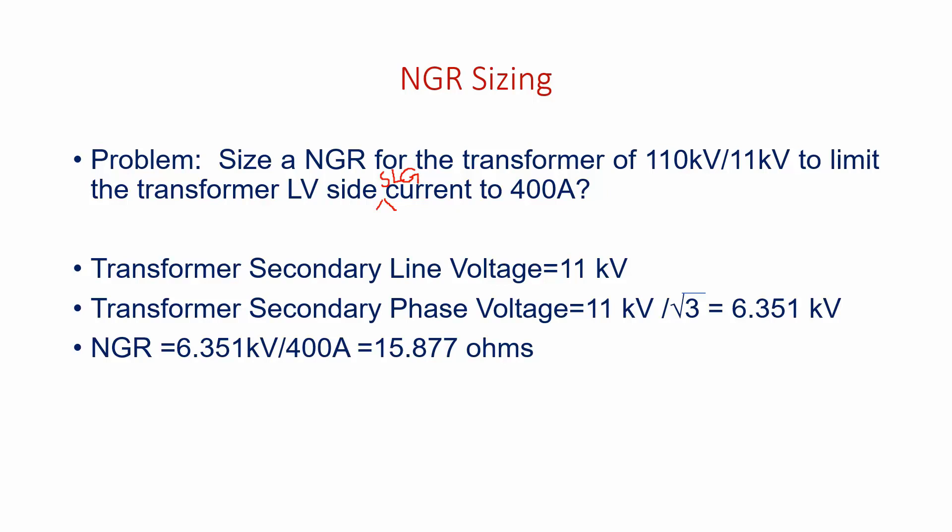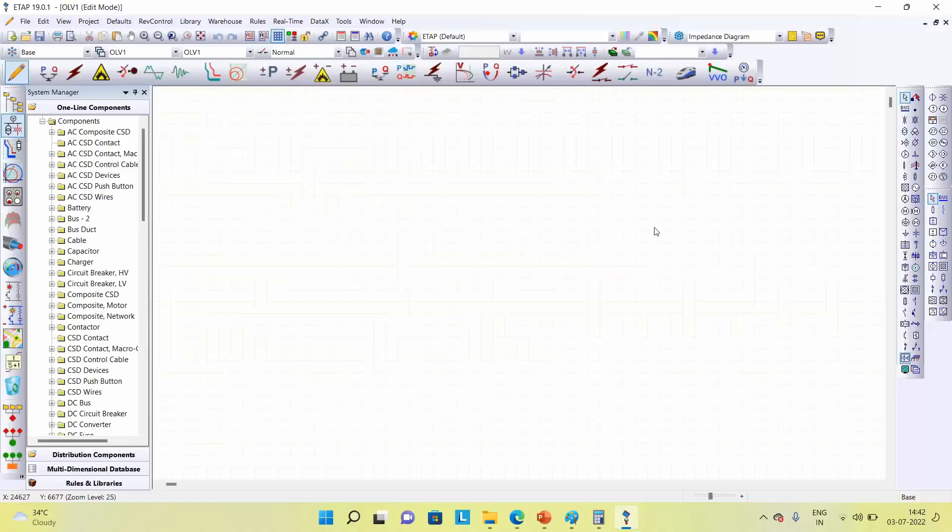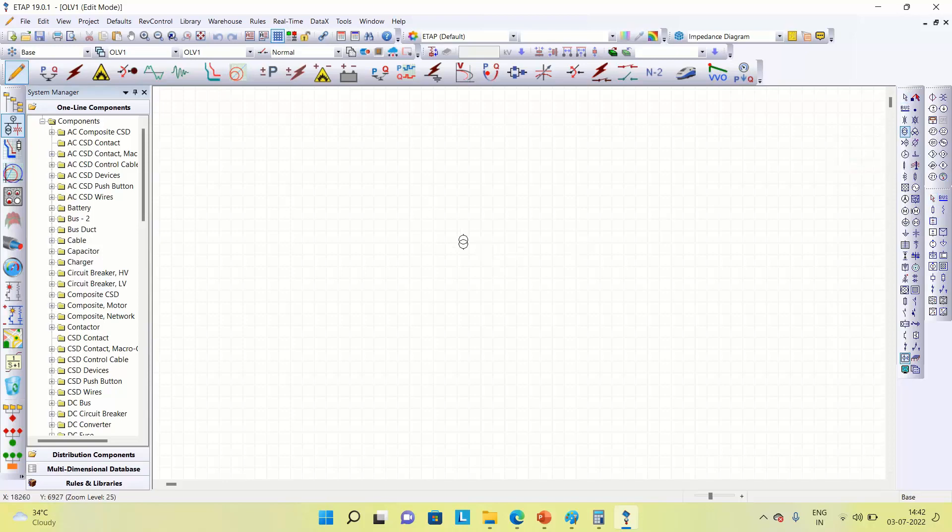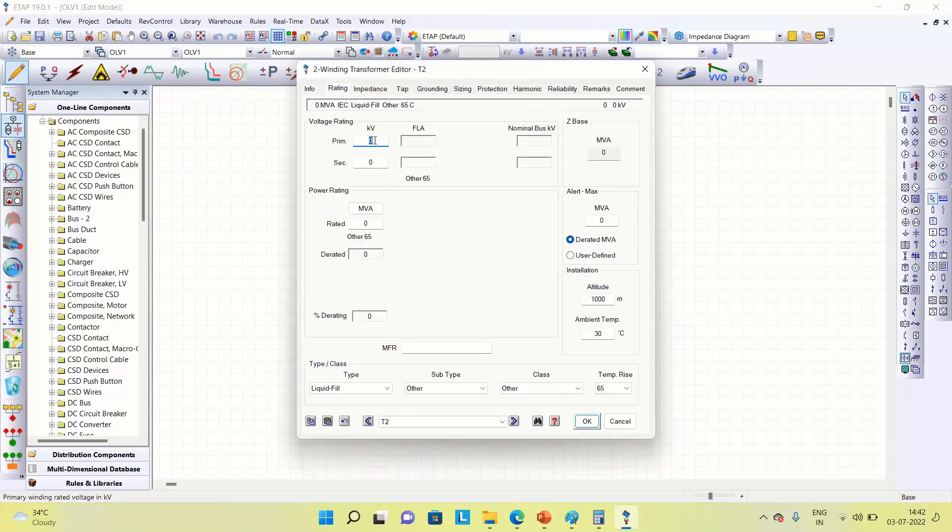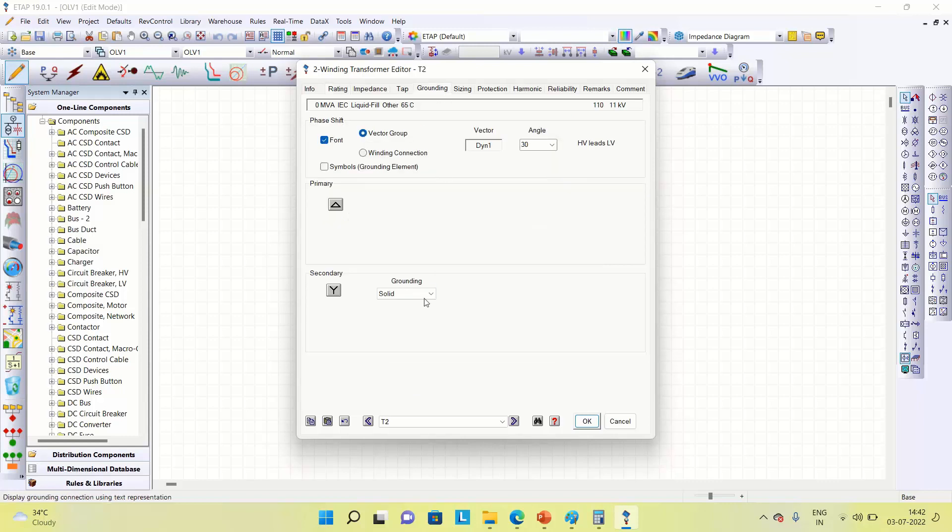Let's go for a simple simulation so that you can further understand this NGR concept. To understand the concept, let's take a transformer with primary of 110 kV, secondary of 11 kV.